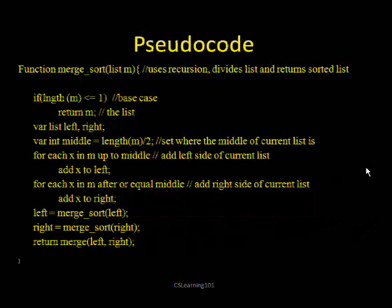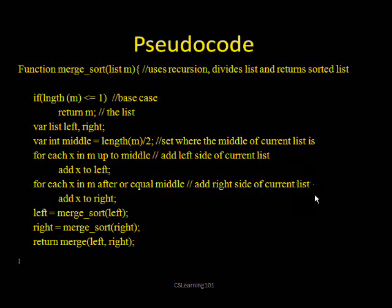Here's some pseudocode you could use for merge sort. This function splits up the list — it decides where the middle is, takes everything from the left side and adds it to a new array called 'left', then takes everything from the right side into an array called 'right'. At the end, it uses recursion to divide those further, and then calls a Merge function to merge the two lists in sorted order.